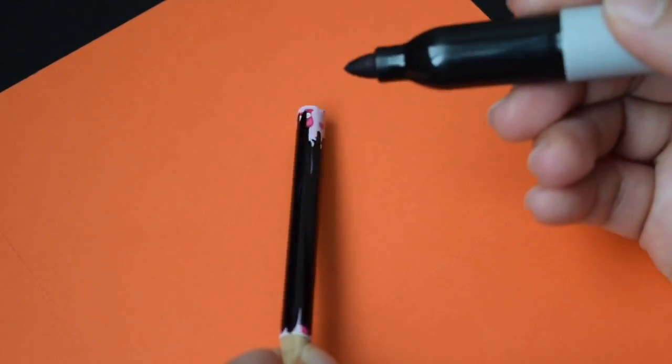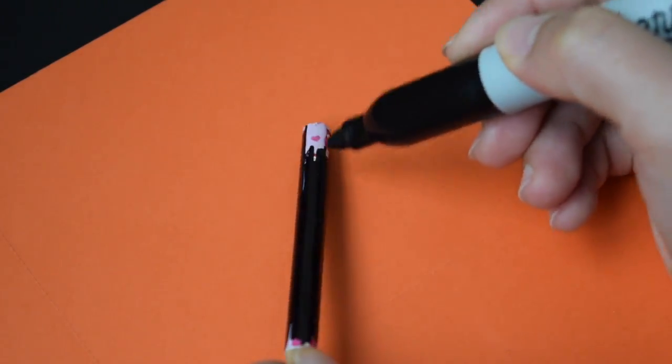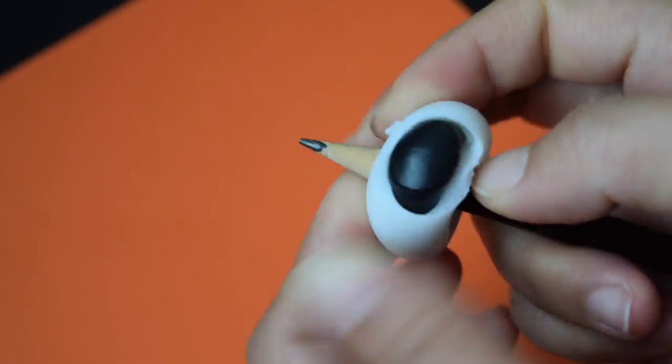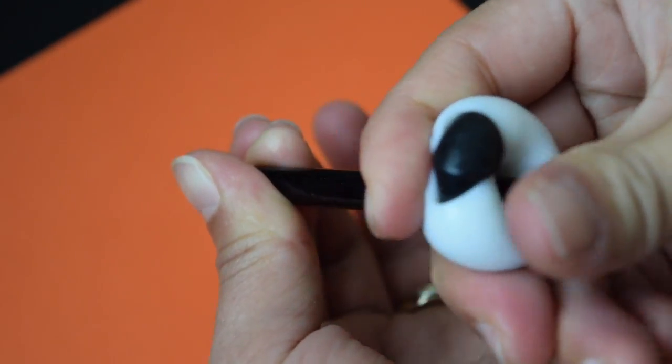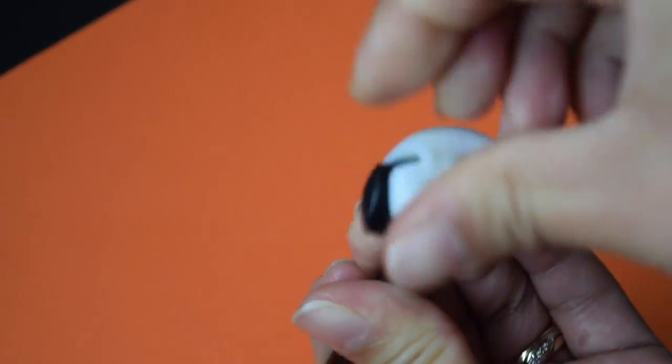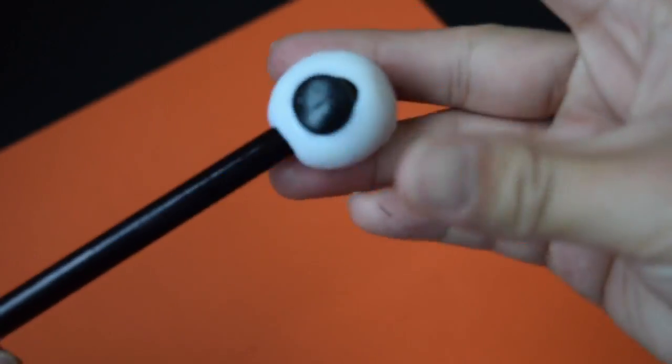Once it's completely covered and dry, take your stretchy eyeballs that I got for two dollars from Walmart with 12 pieces. Go ahead and sandwich your pencil into the stretchy eyeballs. Make as many pencils in different sizes and colors as you wish, and we're done.